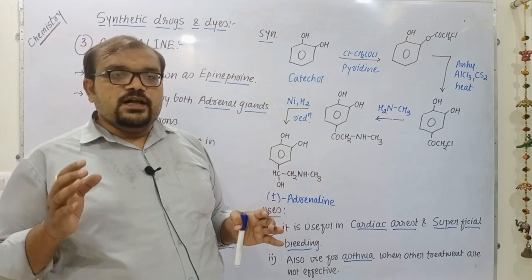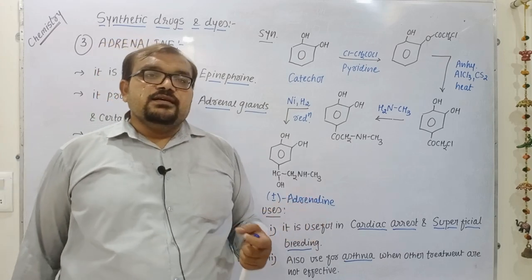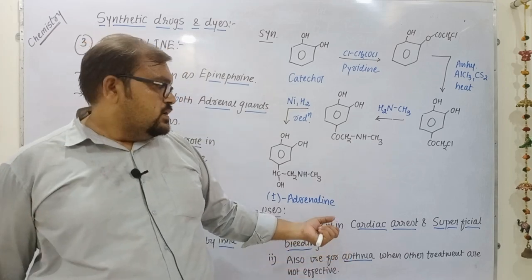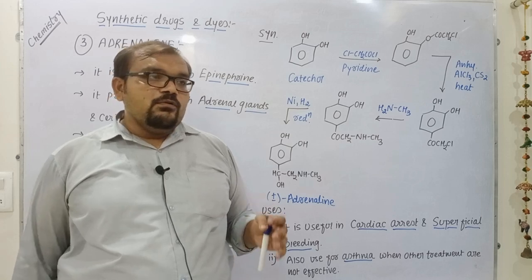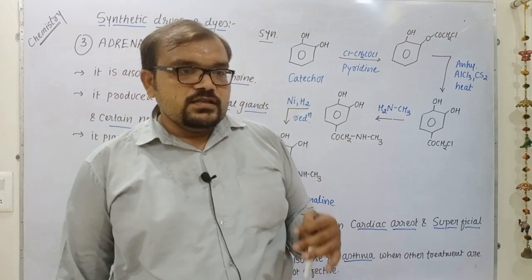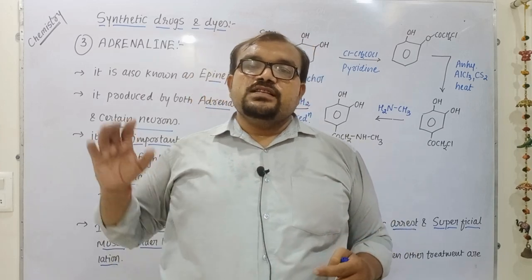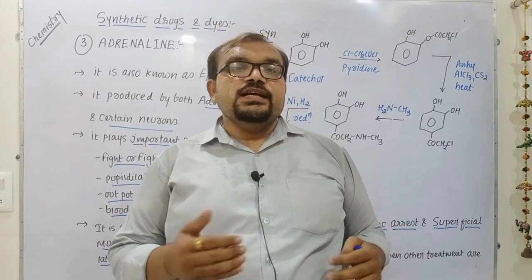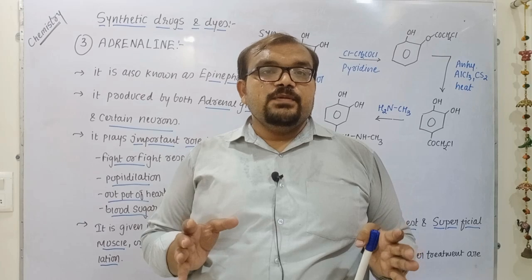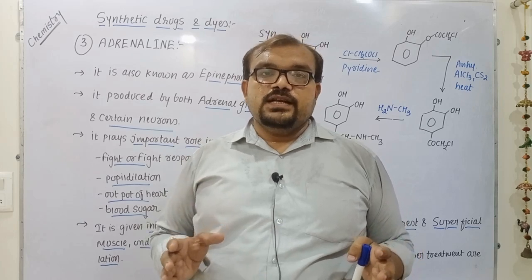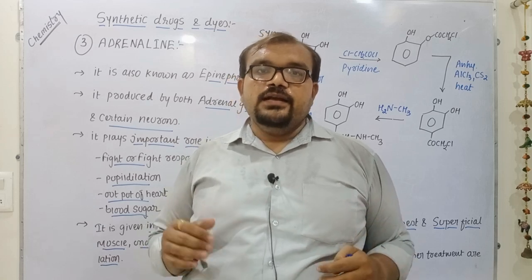We get our final structure of adrenaline. This drug is useful for cardiac arrest, superficial bleeding, and for patients with asthma when other treatments are not effective. By this way we can easily memorize the synthesis of three important drugs: ibuprofen (Brufen), atenolol, and adrenaline.